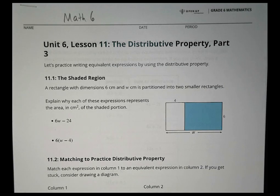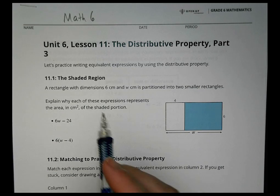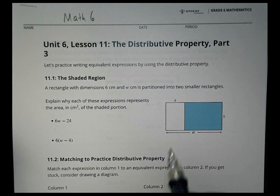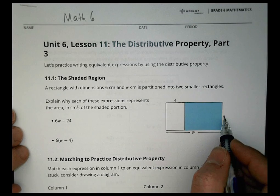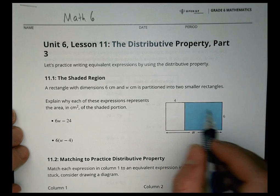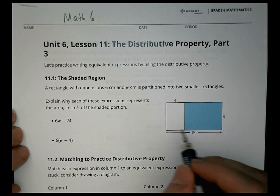Let's practice writing equivalent expressions by using the distributive property. A rectangle with dimensions 6 centimeters and w centimeters is partitioned into two smaller rectangles.